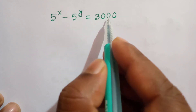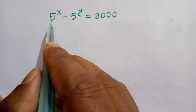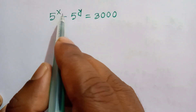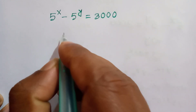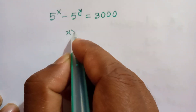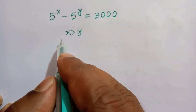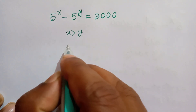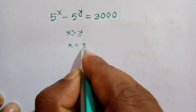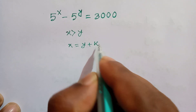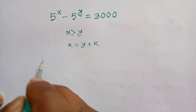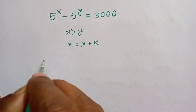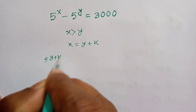This 3000 is a positive integer and the base 5 is the same on both sides, so x must be greater than y. When x is greater than y, then x is equal to y plus some constant number k.